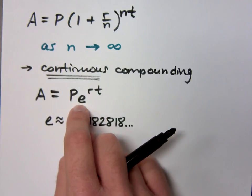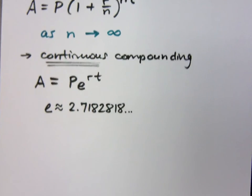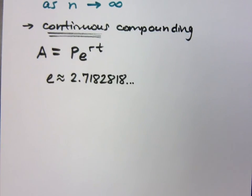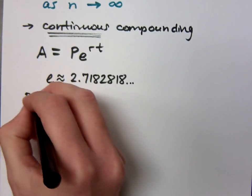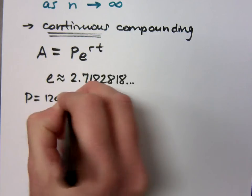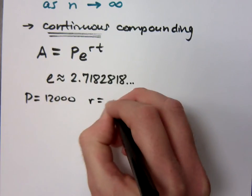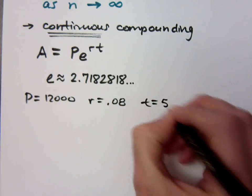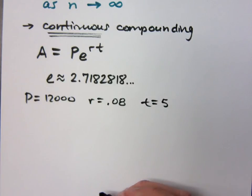I guess you could say that. But if you look at the last example that we had, what were the conditions? The last example we had, we said that the principal was equal to $12,000, the rate was 8%, and the time was 5 years, right? So, let's see what happens if I do continuous compounding. In the last example, we had this.